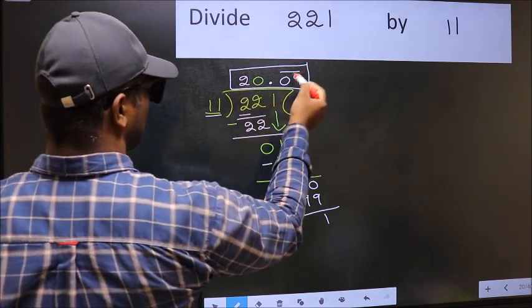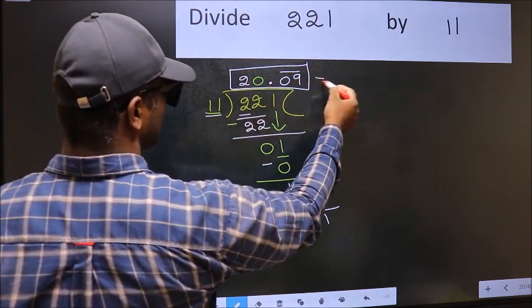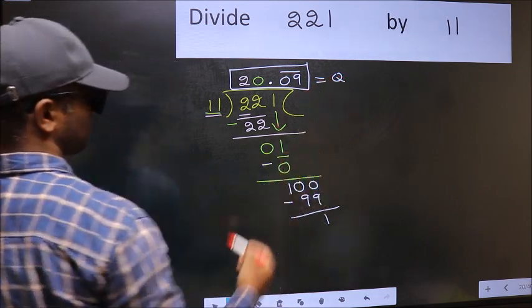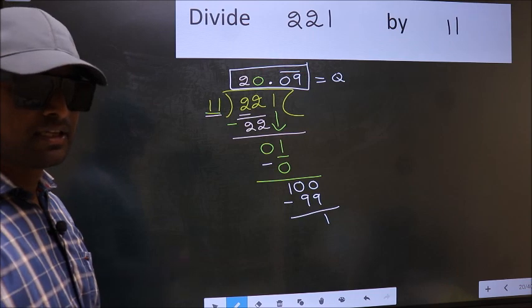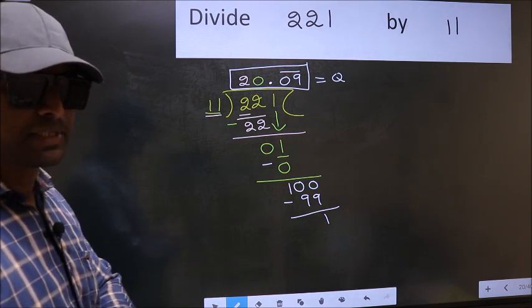So, this is our bar on these two numbers. This is our quotient. Did you understand where does the mistake happens? You should not do that mistake. So, this is our quotient.